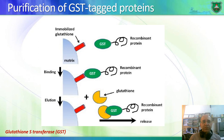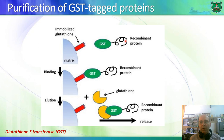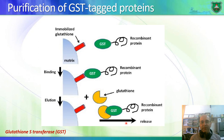We can also use glutathione S-transferase for purification using the same concept: beads with glutathione on the surface — the substrate for the enzyme — are used in a column. The recombinant protein containing the transferase tag binds to the glutathione while everything else passes through, and then we release and purify our protein.